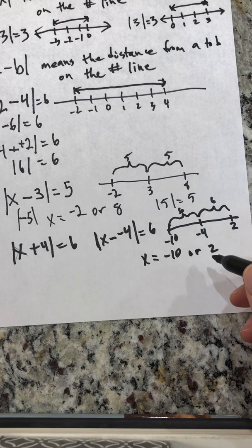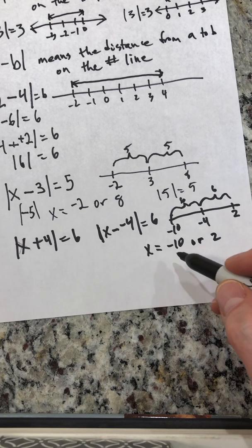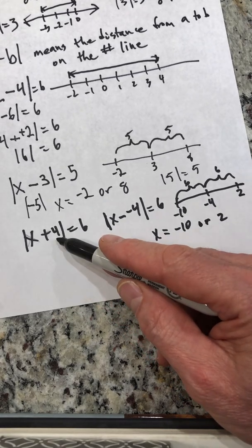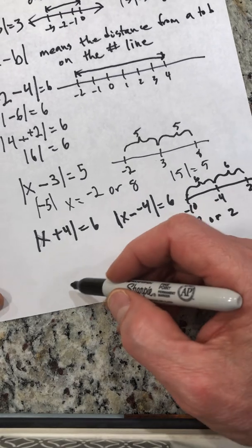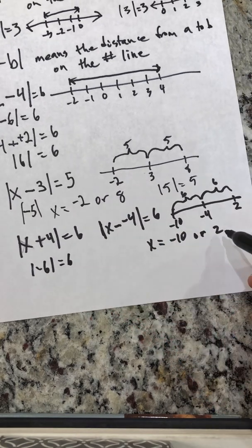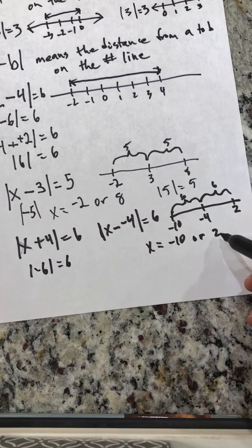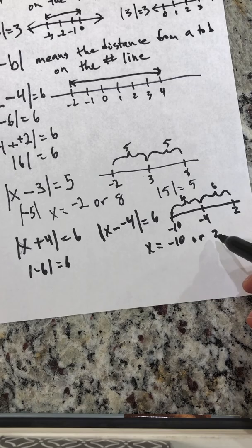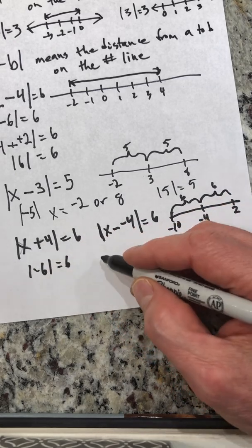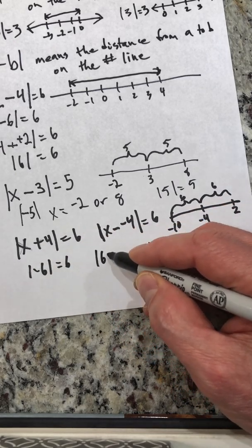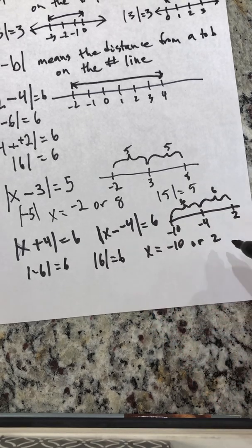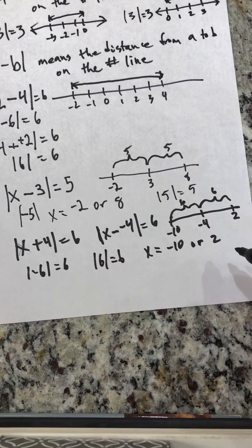We can verify: dropping negative ten in gives negative ten plus four equals negative six, and the absolute value of negative six is six. Dropping two in gives two plus four equals six, and the absolute value of six is also six. So both solutions check out.